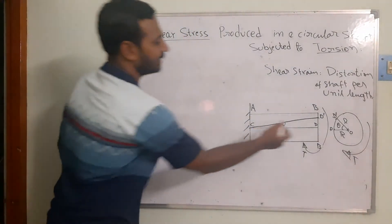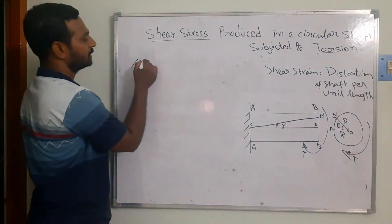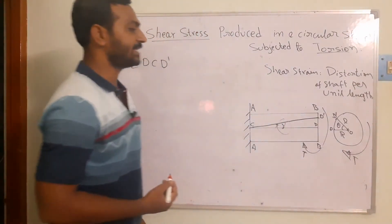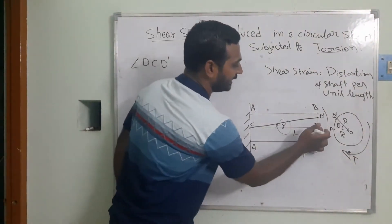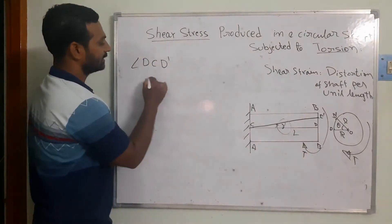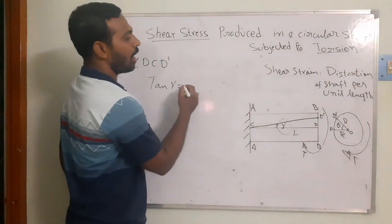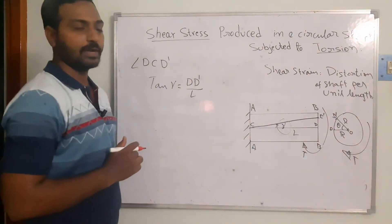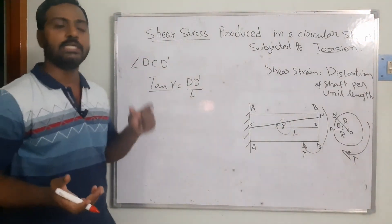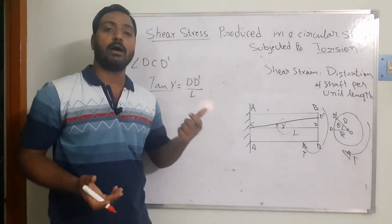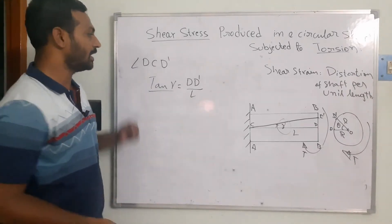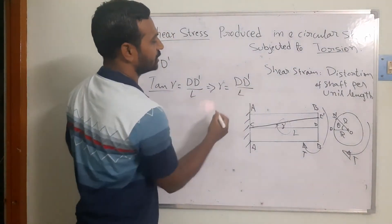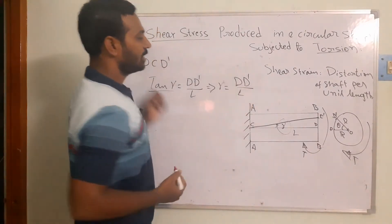Through the length we consider one triangle and through the radius another triangle. In triangle CDD', we find gamma. The total length CD is L, and DD' is unknown. So: tan γ = DD' / L. Since gamma is very small, tan γ ≈ γ, giving us γ = DD' / L.